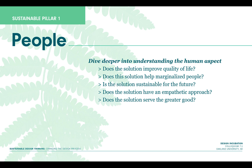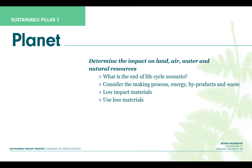The first sustainable pillar on the brief is people. Seeking to understand the human aspect might involve determining how the solution would better one's quality of life. Is the solution rendered from an empathetic point of view? And asking if it's sustainable for the future, and does it serve the greater good? The second pillar is determining the impact on land, air, water, and natural resources — asking what the solution's life cycle might be, really understanding the making process, understanding the supply chain of materials, and how much waste is generated.